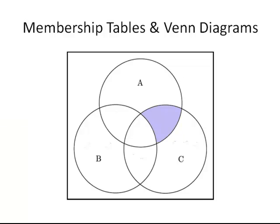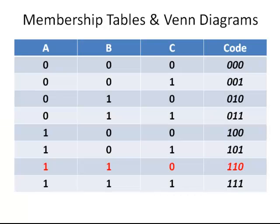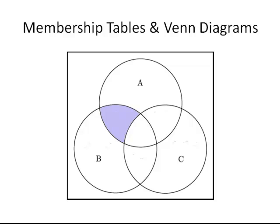The second last one is 1, 1, 0 — this is the equivalent for A and B. It is enclosed by circle A and enclosed by the circle for B, but outside the circle for C.